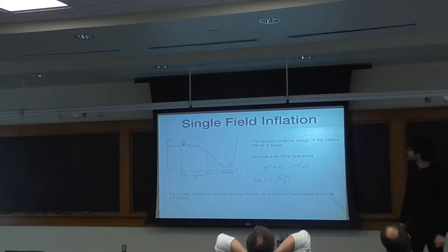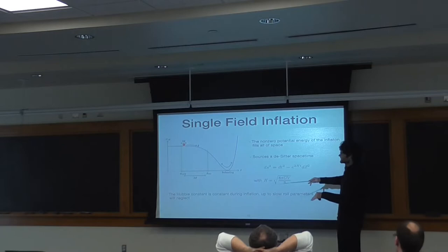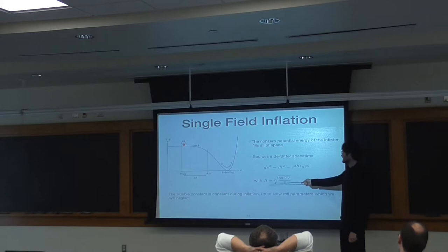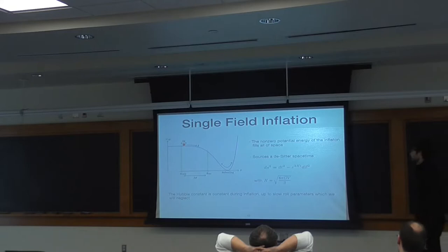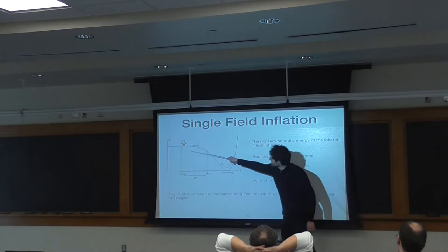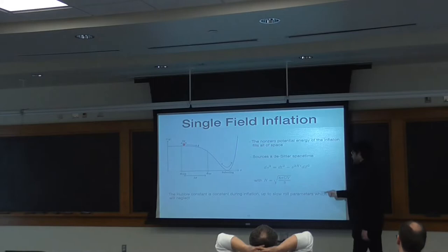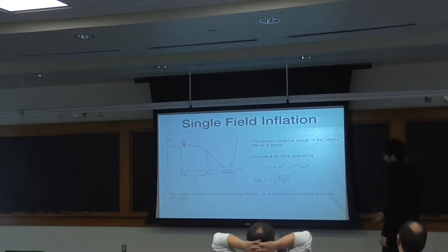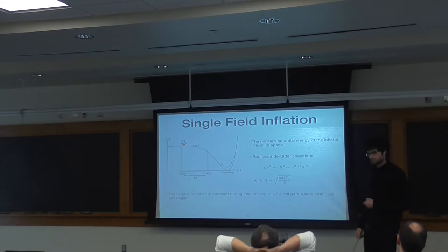This constant energy density is the de Sitter space. The intuitive idea is that the inflaton's potential energy is the cosmological constant filling all space, and that cosmological constant drives the exponential expansion and curves spacetime. The Hubble constant is related to this energy density in the usual way. We're going to assume the Hubble constant is truly constant during inflation, though the inflaton is moving, making H a function of time. This is generally a small correction characterized by the slow-roll parameters, which we'll neglect. We can just assume H is constant for the computation of non-Gaussianities.